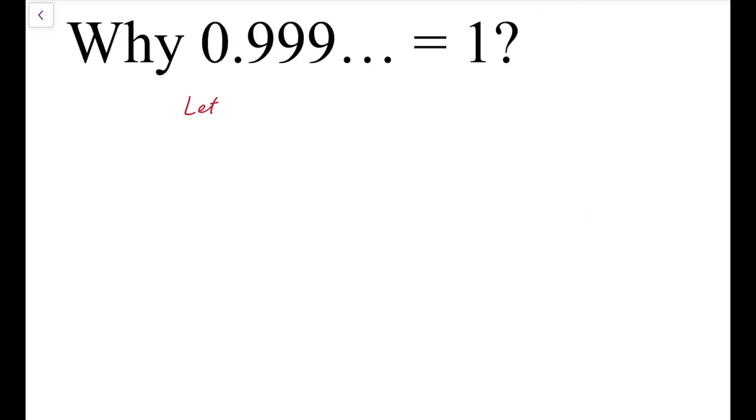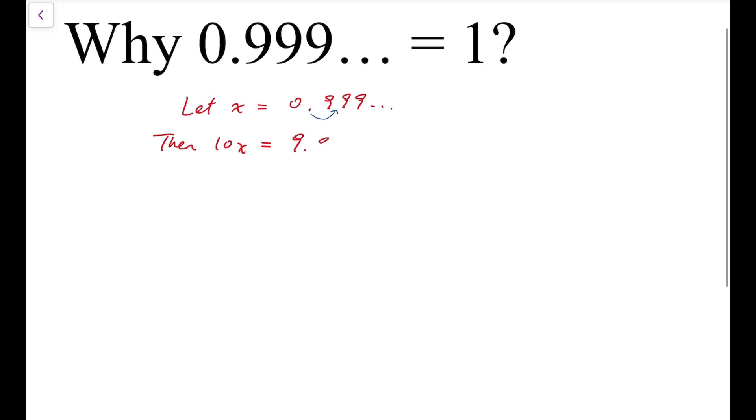So I'm going to let x equals this number 0.999 recurring. Then I'm going to multiply both sides by 10. So the left hand side becomes 10x. And for the right hand side, it's just equivalent to moving the decimal point by one digit to the right. So the number becomes 9.999 recurring.